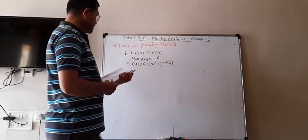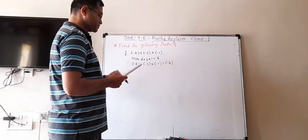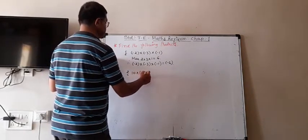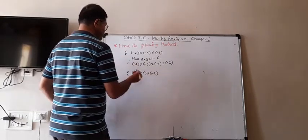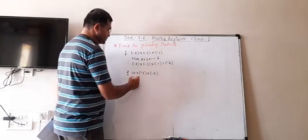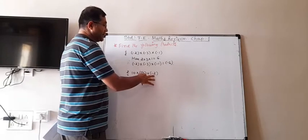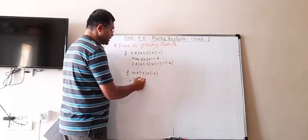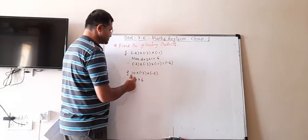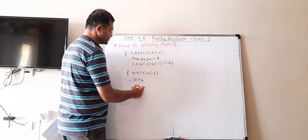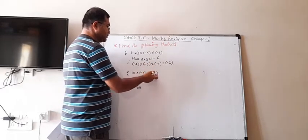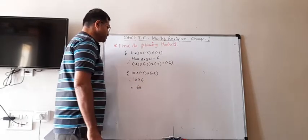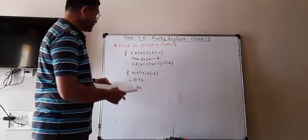Second: 10 × (-3) × (-2). Negative × negative = positive, so 3 × 2 = 6, and 10 × 6 = 60. The answer is 60.